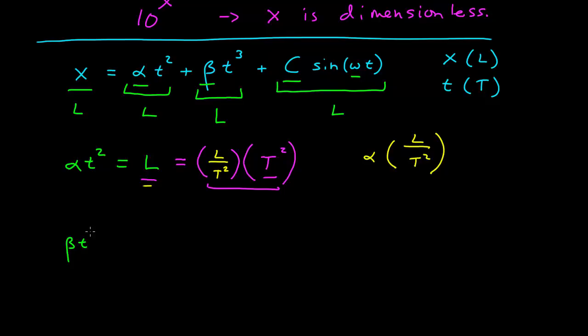Beta t cubed. This also must have dimension of length, and that's equal to whatever the dimension of beta is. The units of t cubed is time cubed. The beta must multiply by t cubed to give me length, so that's length over t cubed. The dimension of beta is length over time cubed.